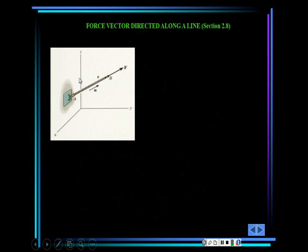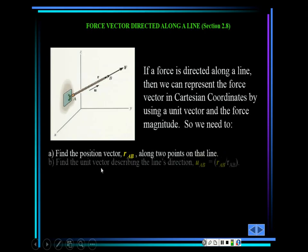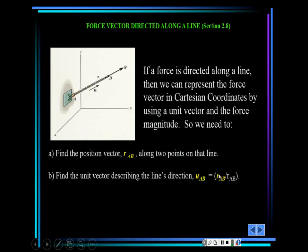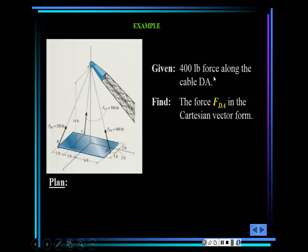For a force vector directed along a line: the unit vector is dimensionless, so the unit vector of the position vector equals the unit vector of the force. Find position vector AB, get its magnitude, divide to get unit vector AB, then multiply by the magnitude of the force to get the force in Cartesian notation.